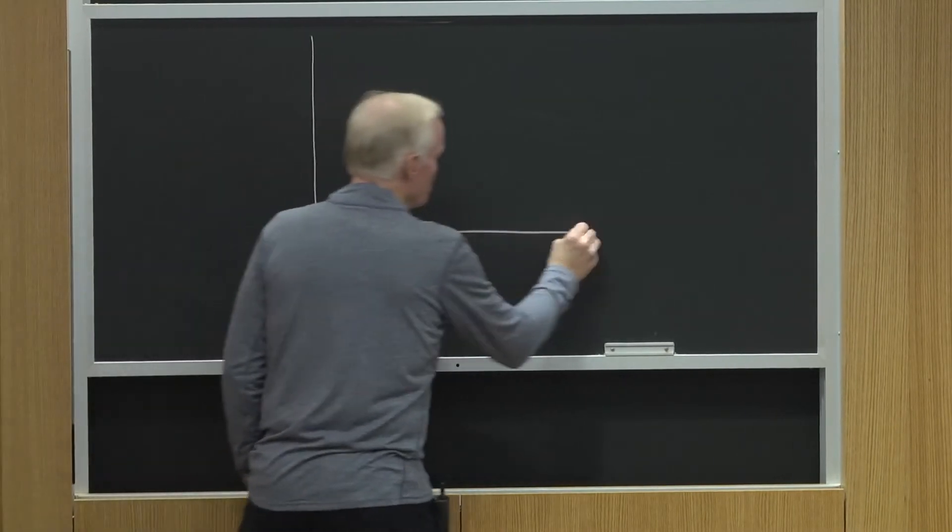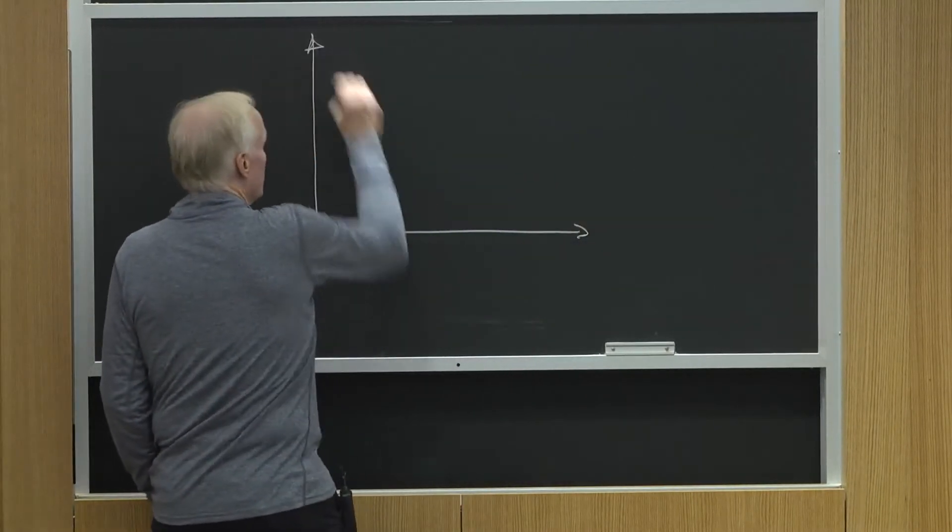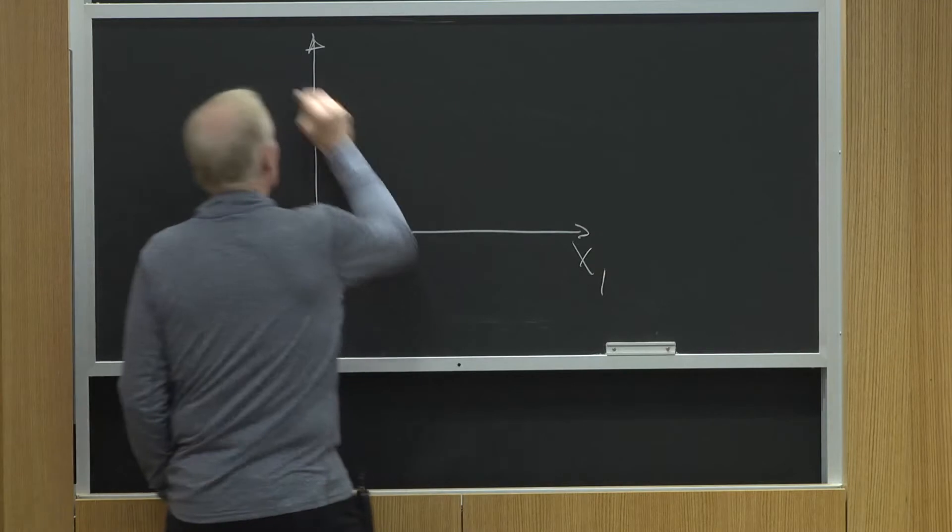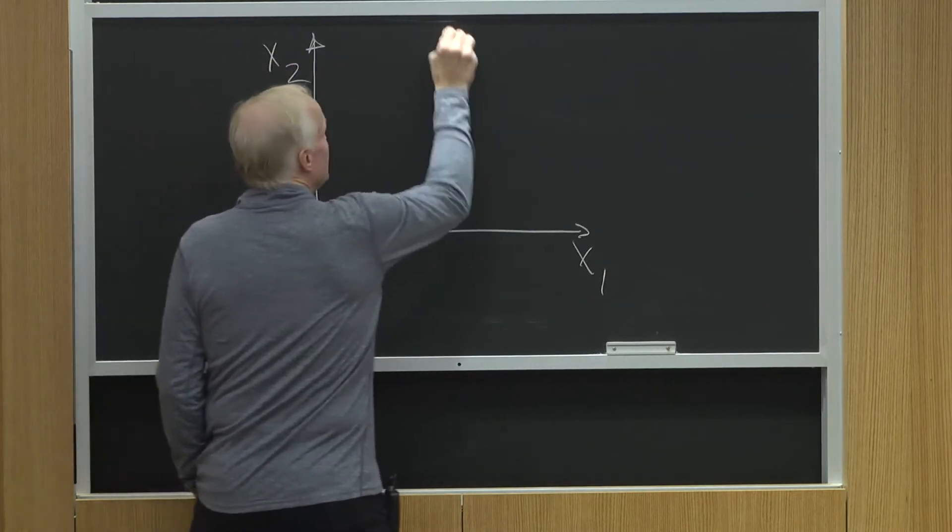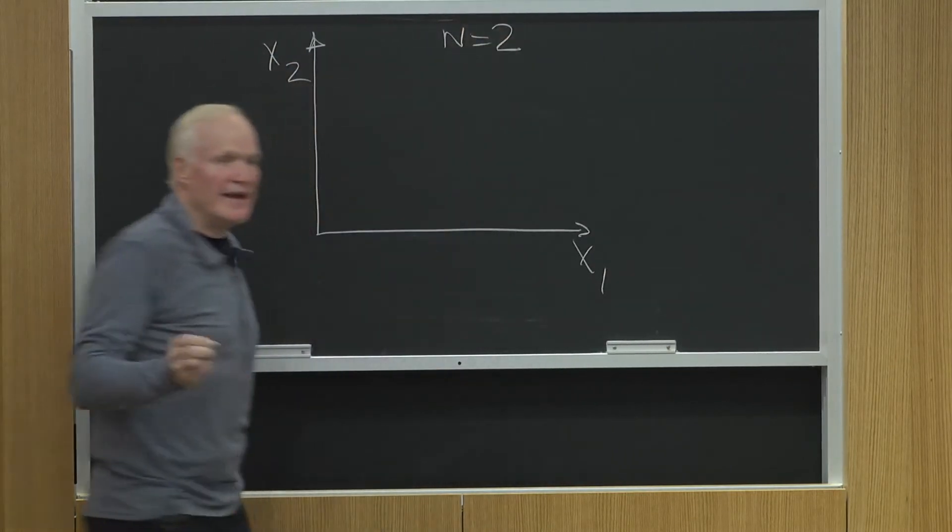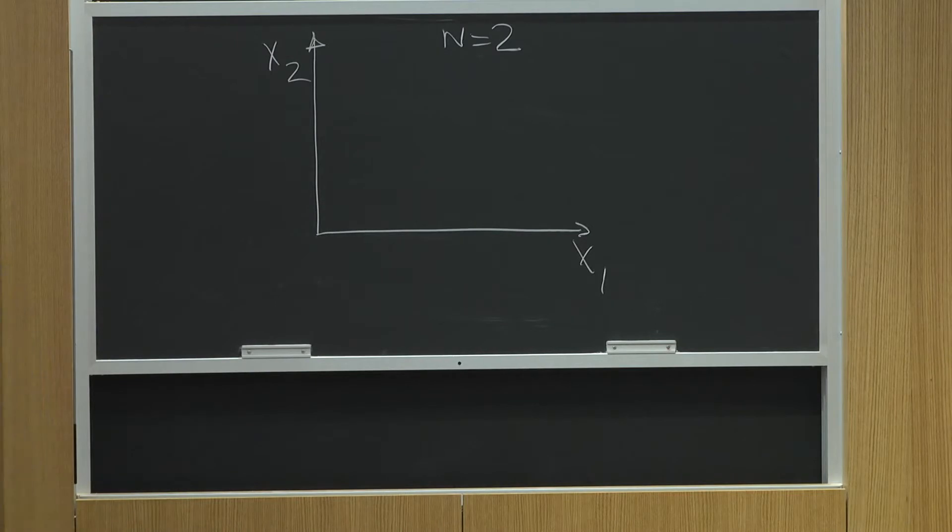So think about the two good cases. Here's X1, here's X2. This is N equals 2. In the N equals 2 world, I can draw a graph.